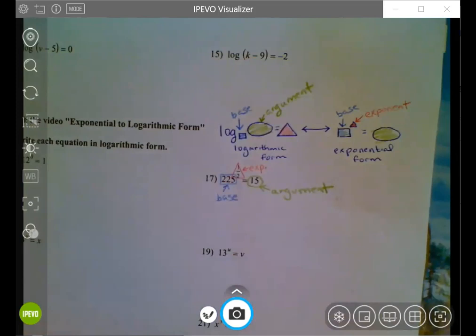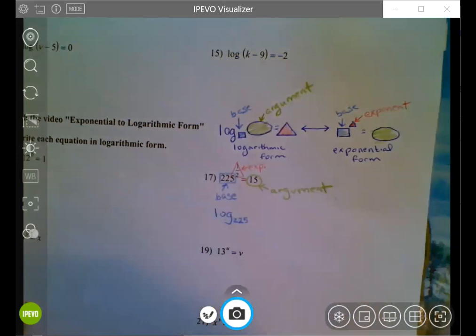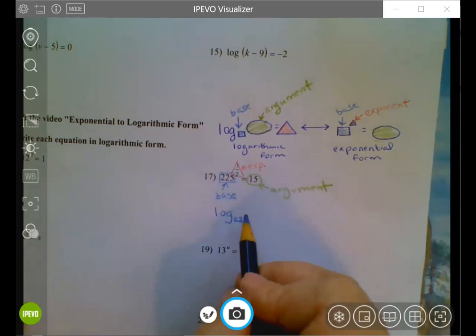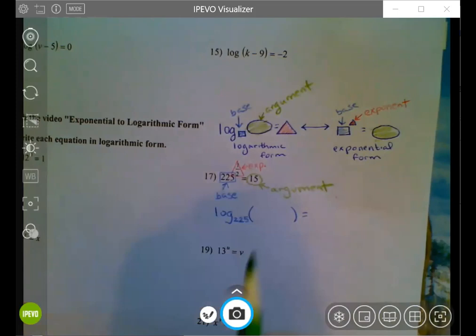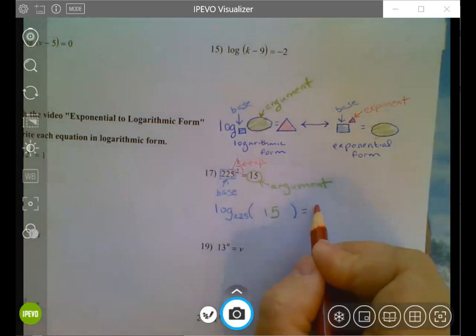And my argument is going to become 15. So when I rewrite that in logarithmic form, I'm going to have log base 225. I write the 225 as a small number down below the normal line, and then that gets parentheses. What goes inside the parentheses is the argument, and the exponent goes to the other side of the equation like so.